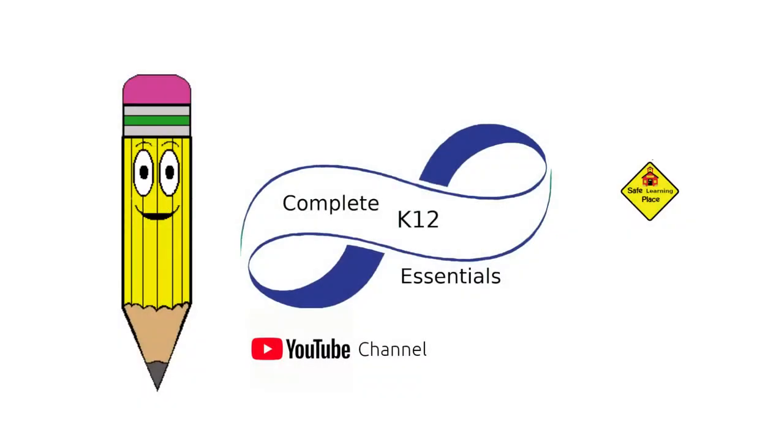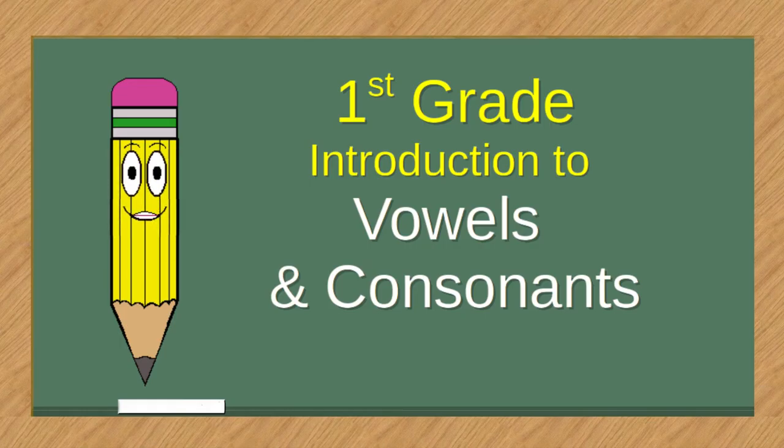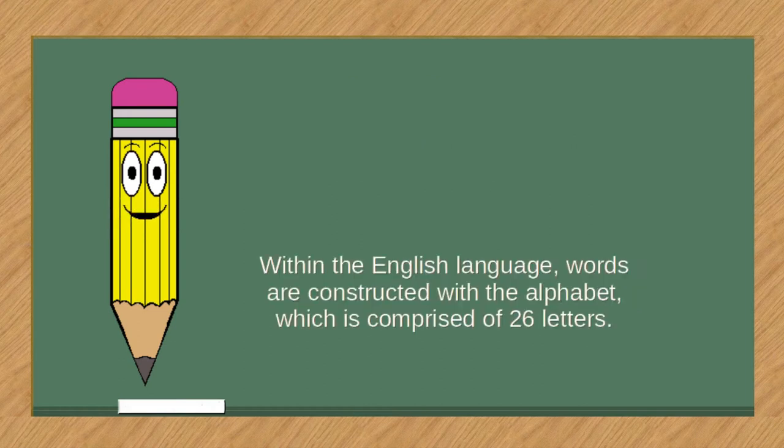Welcome to Complete K-12 Essentials. First Grade Introduction to Vowels and Consonants. Within the English language, words are constructed with the alphabet, which is comprised of 26 letters.